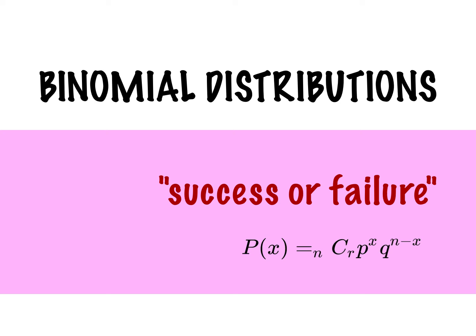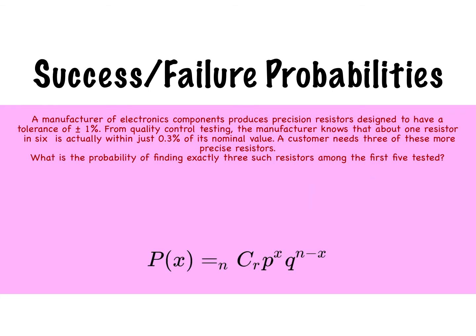Binomial distributions are based on success or failure. Success, failure probabilities. It's either successful or it's not.